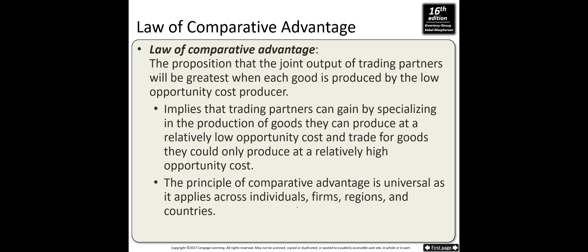Specialization leads to gains through comparative advantage. Comparative advantage is the proposition that the joint output of trading partners will be greatest when each good is produced by the low-opportunity-cost producer. In the Tom Brady and Forrest Gump example: if Tom mows the lawn for two hours, his opportunity cost is $100,000. Forrest Gump's opportunity cost is only $60. Since Forrest Gump has the lower opportunity cost, he should specialize in mowing the lawn.